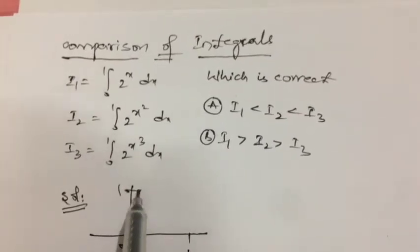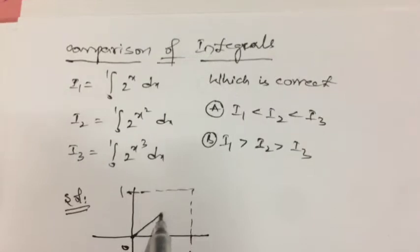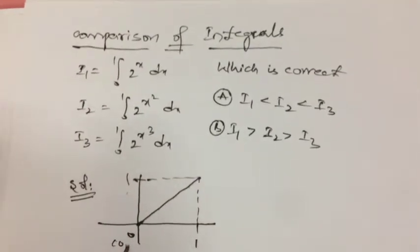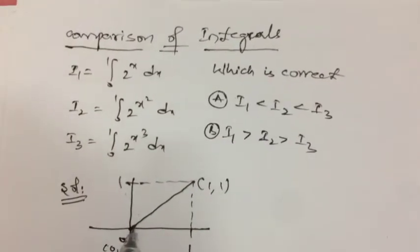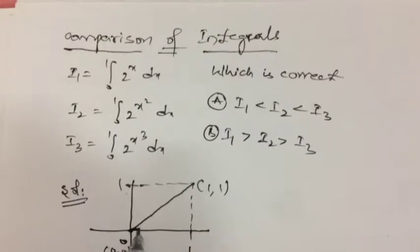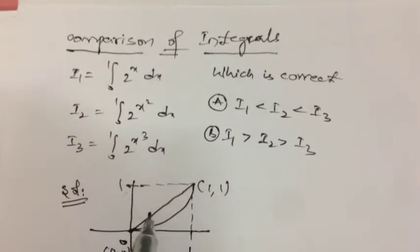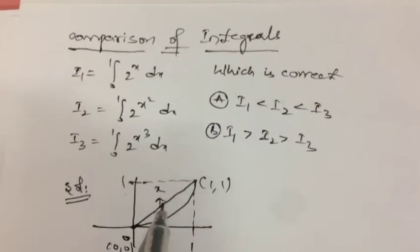But x, y equal to x is the straight line. So join (0,0) and (1,1). And y equal to x² is a parabola. But if you see, it is always less than x. Because if you consider any value from 0 to 1, x is greater than x².